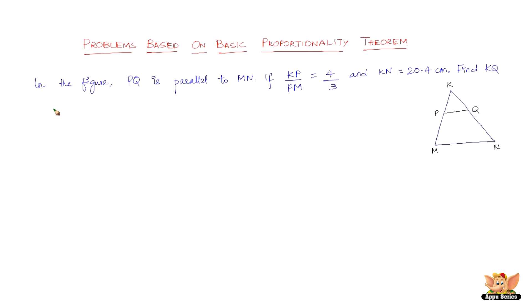Now, in triangle KMN, we've got PQ parallel to MN. That is what is given. Here it is, PQ is parallel to MN. So that is one data we've got.